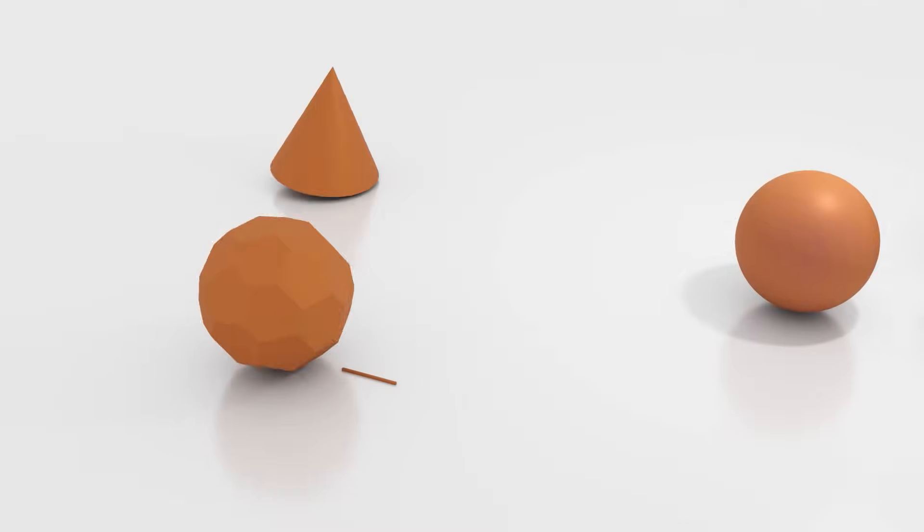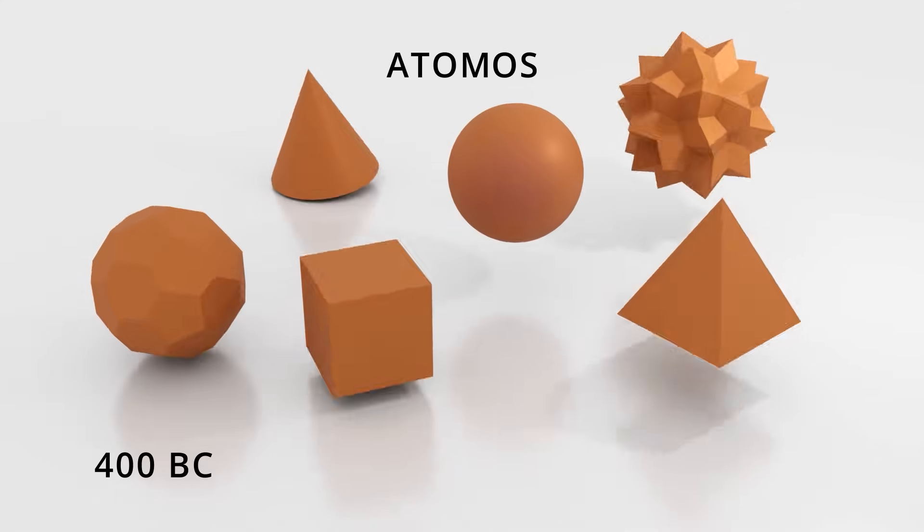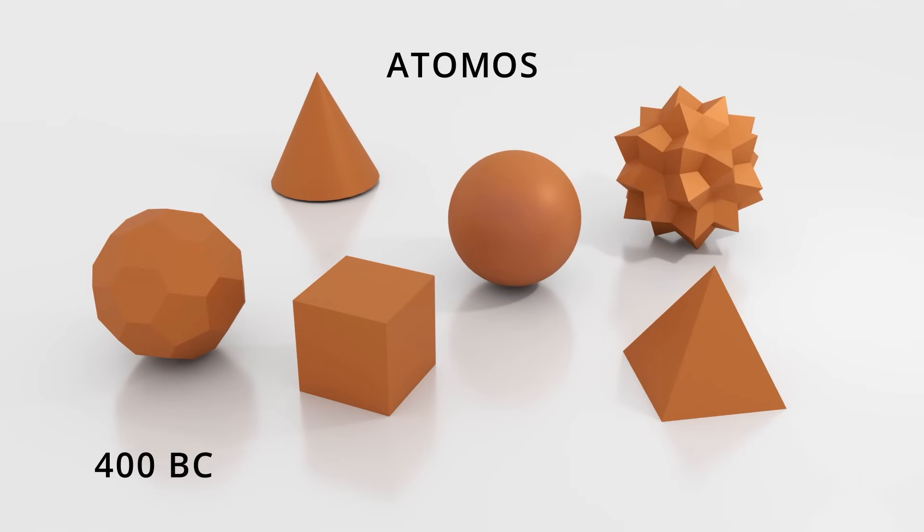Humans have long wondered about the structure of matter and what makes up our world. The Greek philosopher Democritus first developed the concept of atomos, an indivisible building block of matter. He believed it came in many shapes, depending on what kind of matter it made up.